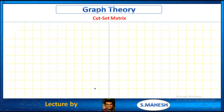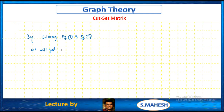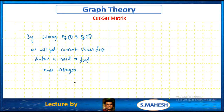By solving equation 1 and equation 2, we will get the current values first. Later, we need to find the node voltages. That's all about the cut set matrix.